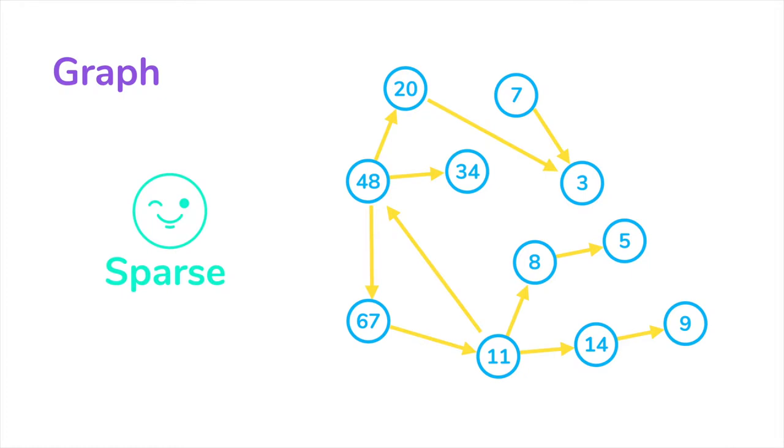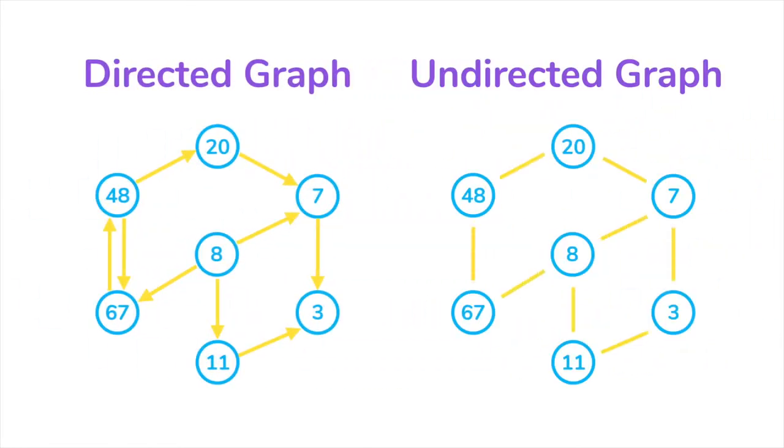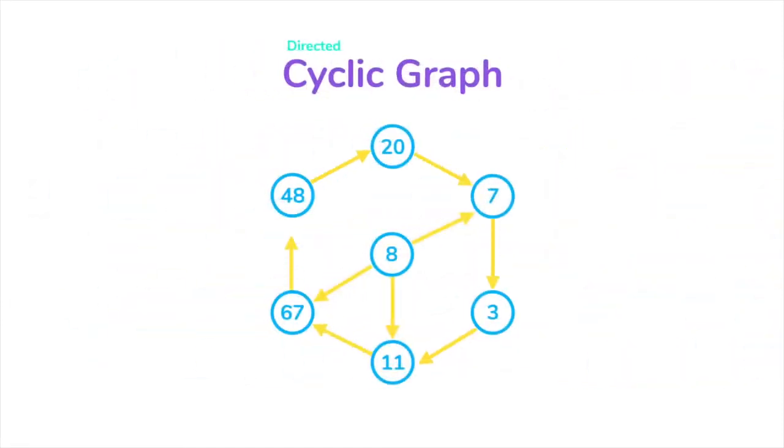Graph is an abstract data type, and so there are many different ways to implement it. You can make it a directed or undirected graph. An undirected graph means that every edge is bi-directional. It goes both ways. You can also allow cycles or not.